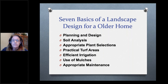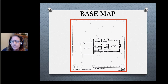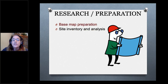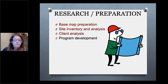The first thing you want to do is get a base map of your yard. You can get a plat survey — the Tarrant Appraisal District has a copy you can download for a small fee, or you can just draw one out. You'll want to do research and preparation, base map preparation, a site inventory analysis, a client analysis of what you want and need, and then program development for how you're going to have it put in.